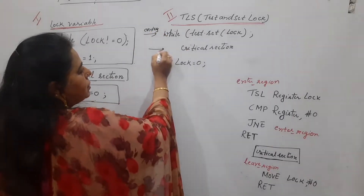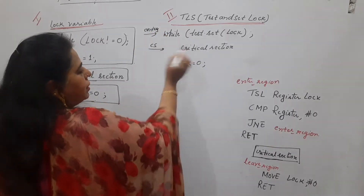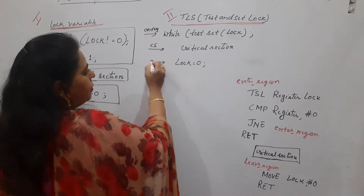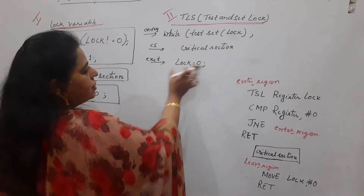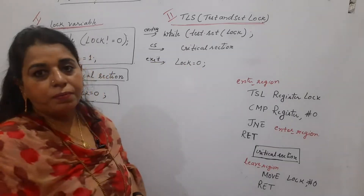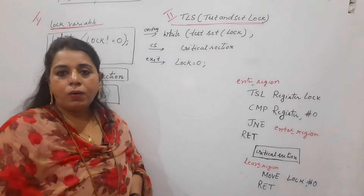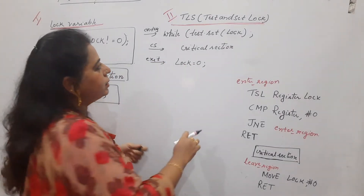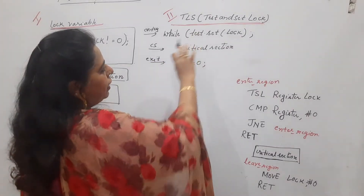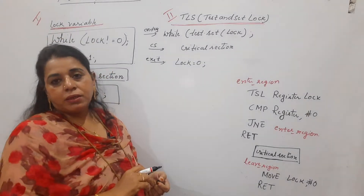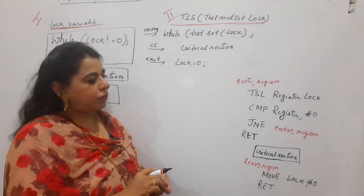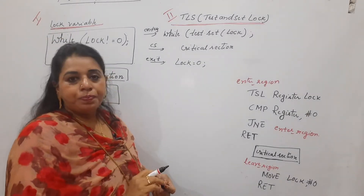The critical section will always be there, and in the exit section this is the line of code. Now, how do we understand these three lines of code? We have to check here whether mutual exclusion can be satisfied or not.